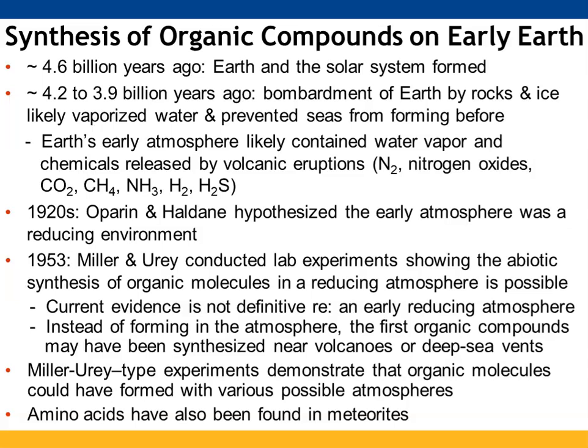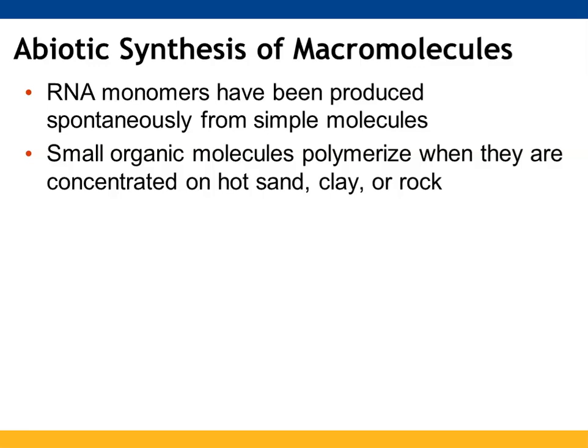Miller-Urey type experiments have demonstrated that organic molecules can form in different types of atmospheres. It has also been shown that amino acids are present in meteorites. To produce macromolecules abiotically, RNA monomers are produced spontaneously from simple molecules. Organic molecules have the ability to polymerize — that's one of the things that has to take place with macromolecules if they are concentrated on hot sand, clay, or rock.